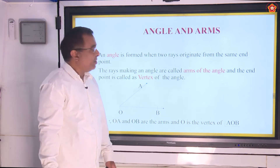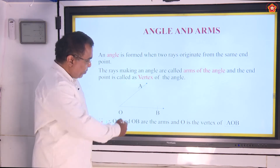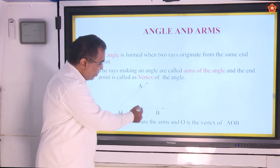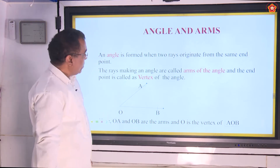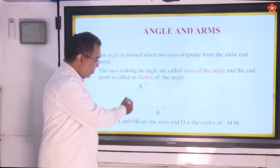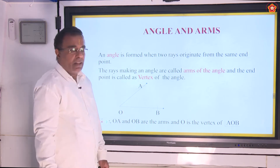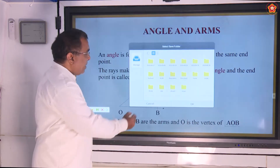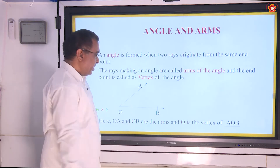Next, you should know what is meant by an angle. An angle is formed when two rays originate from the same endpoint. Look at the diagram. We have two rays, namely OA and OB. Both of them meet at a common point and they are originating from that same point O. Then we call that as an angle. The two rays which are making an angle, we call them as arms of the angle. Here OA and OB are the two arms of the angle. O is known as the vertex of the angle.